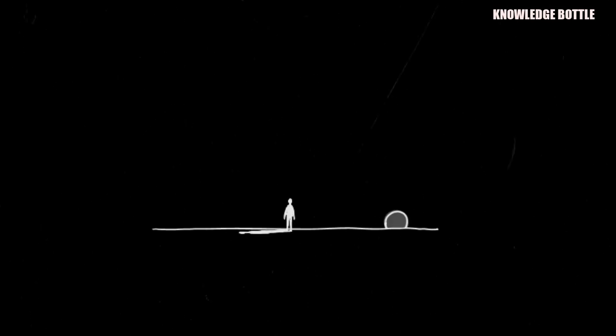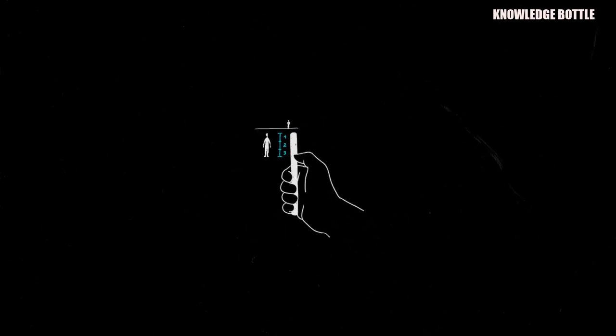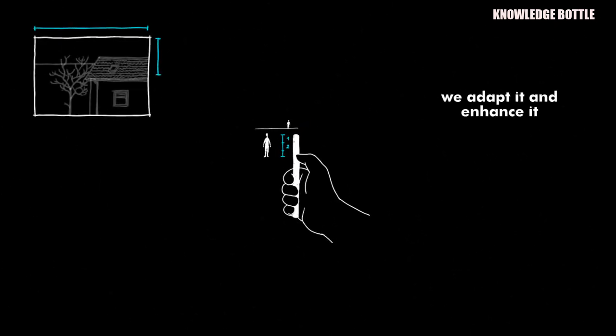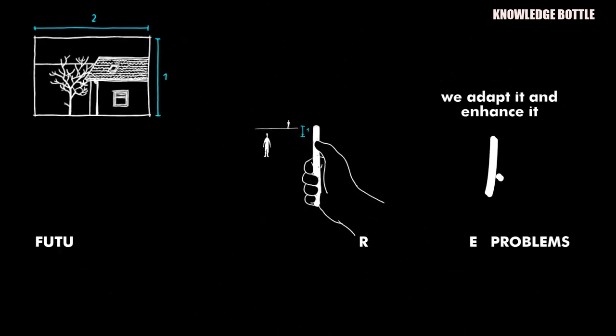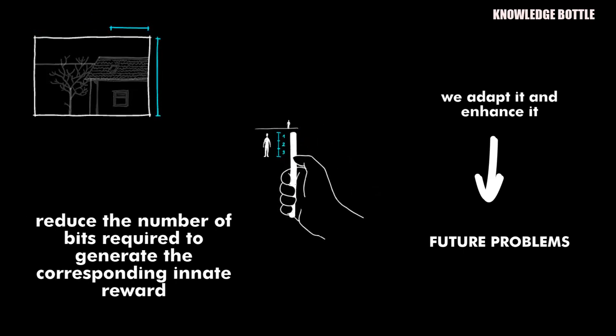Think about whenever we want to learn a new trick or skill. We summarize the same learning mechanism, the same learning path, then we adapt it and enhance it so that we can apply it to another set of future problems and reduce the number of bits required to generate the corresponding innate reward.